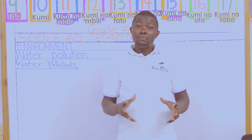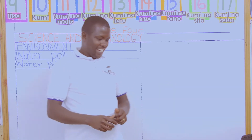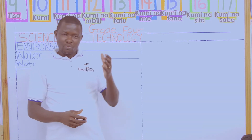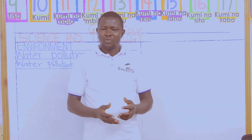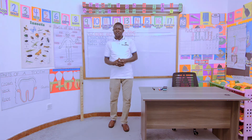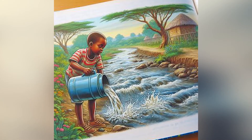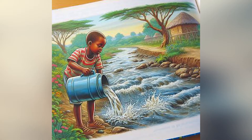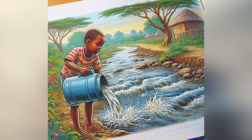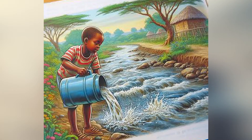Now I would like us to pair into two and observe the following pictures. From picture one, what can you see? You can see a boy urinating in water — a boy urinating in water.